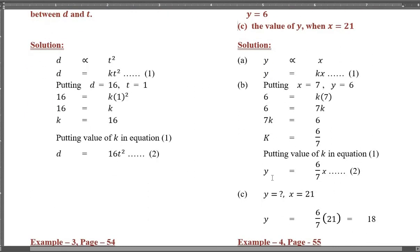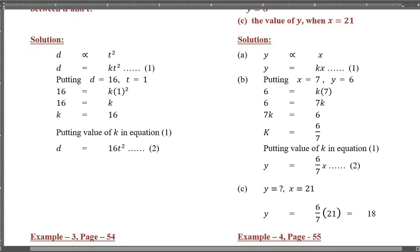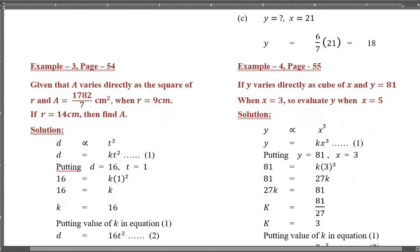Putting the value of k in equation number 1, y equals (6/7)x — this is equation number 2. For part (c), find the value of y when x equals 21. Putting x equals 21: y equals (6/7)·21. Since 7 threes are 21, we get y equals 6·3, so y equals 18.